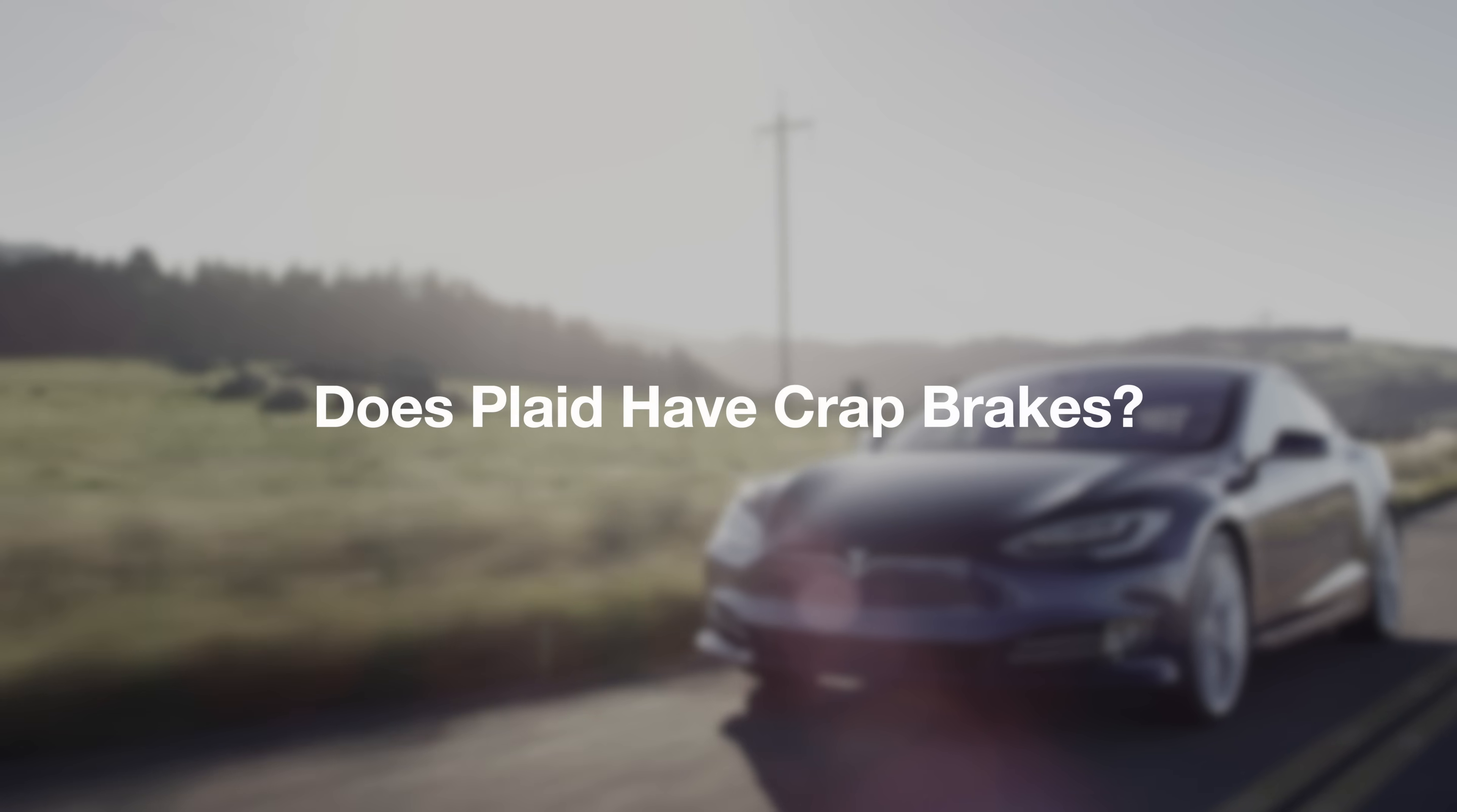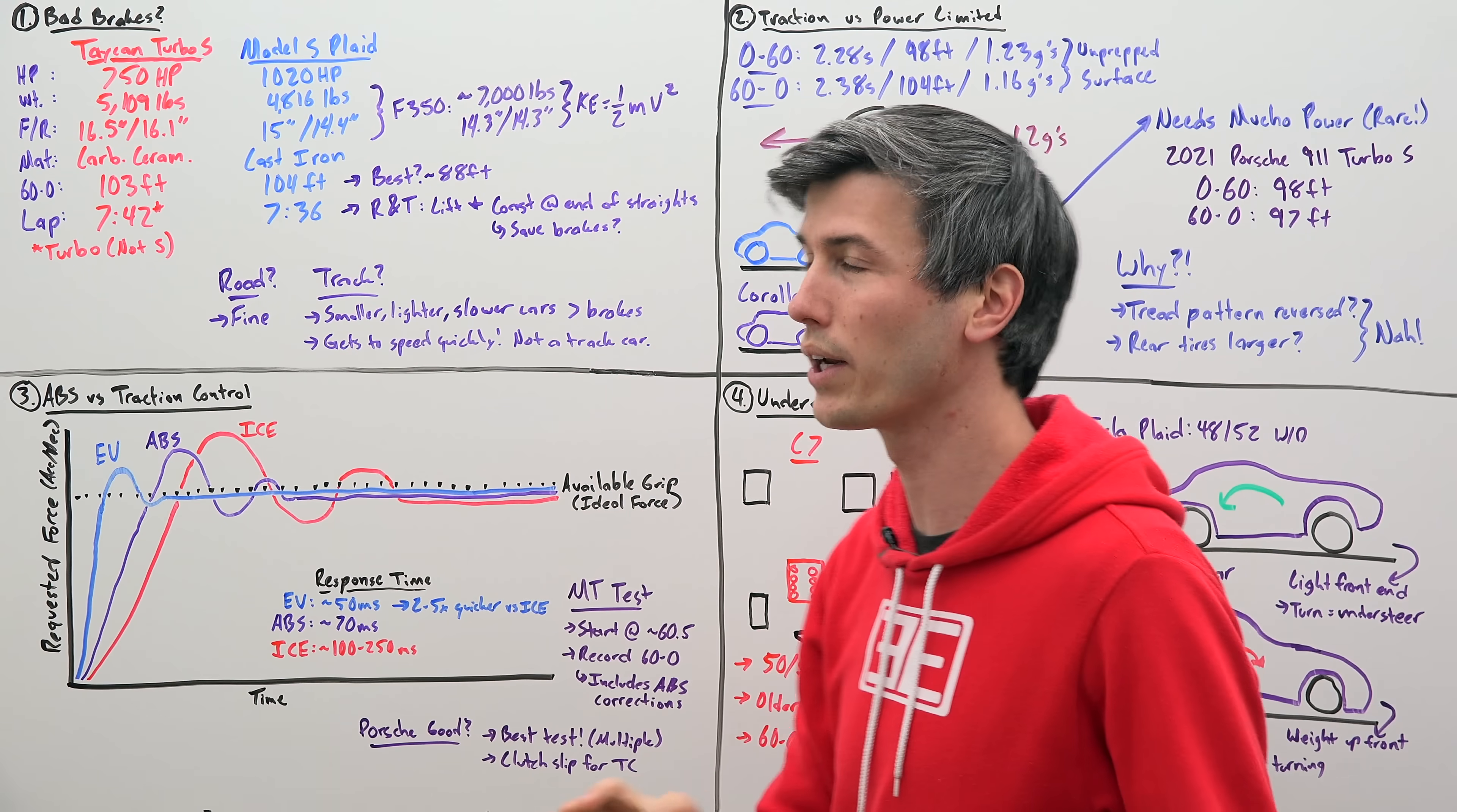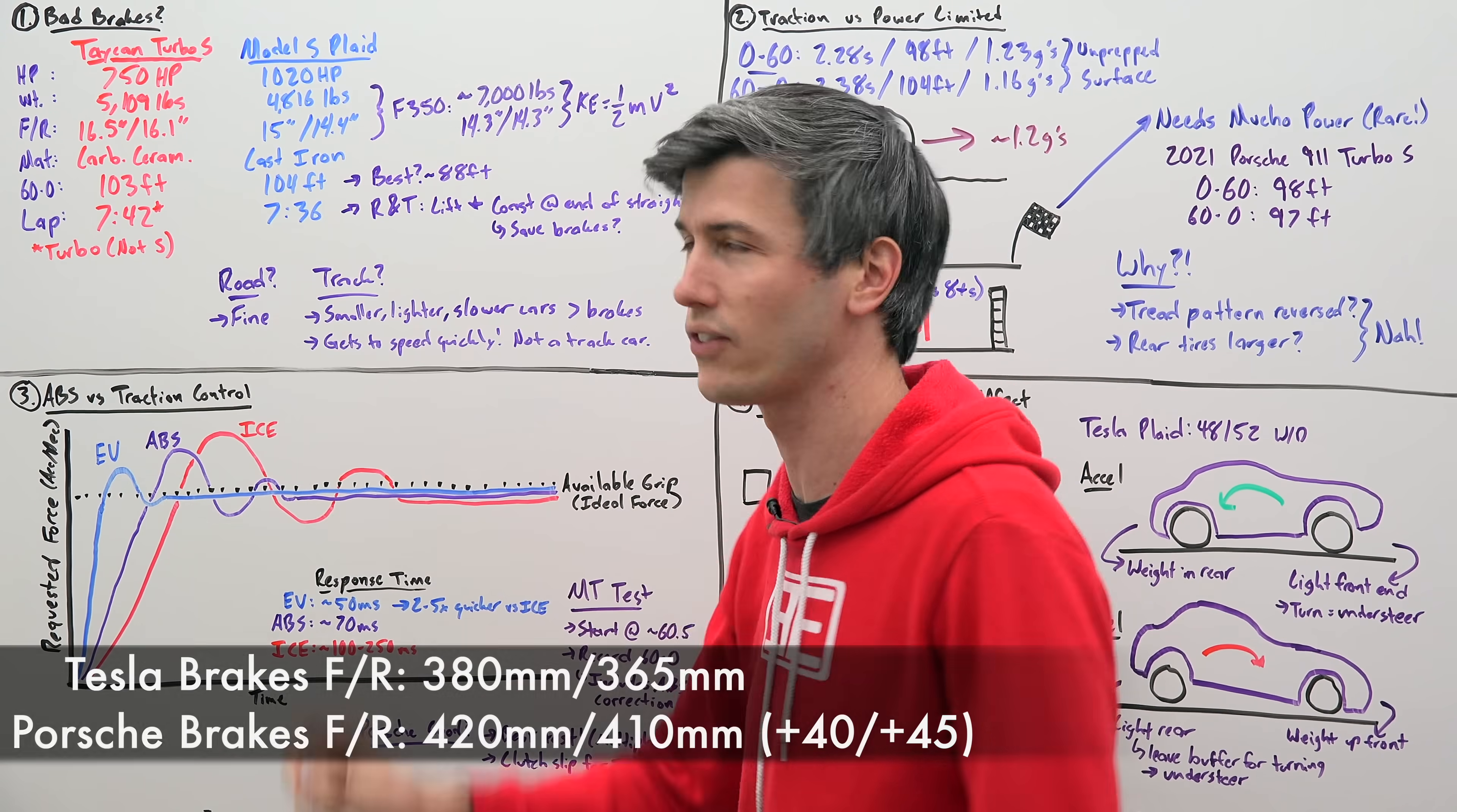Let's start with the first question: does the Plaid have crap brakes by comparing it to its most natural competitor, the Porsche Taycan Turbo S. The Taycan has a peak horsepower of 750 versus the Model S Plaid's 1020 horsepower. The Taycan is heavier at 5,100 pounds versus the Plaid at about 4,800 pounds, but really I think the power is the more important factor when it comes to braking. The Porsche has 16.5 inch rotors up front and 16.1 in the rear versus the Tesla's 15 inch up front and 14.4 in the rear. So Taycan brakes are significantly larger, about 1.5 inches in the front and 1.7 inches in the back larger.